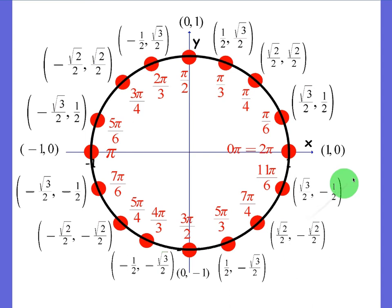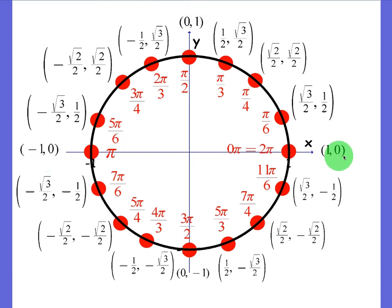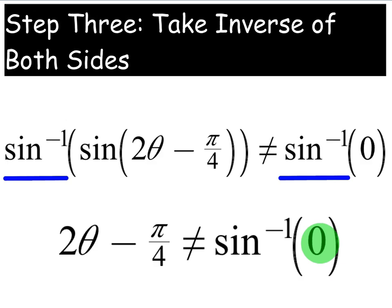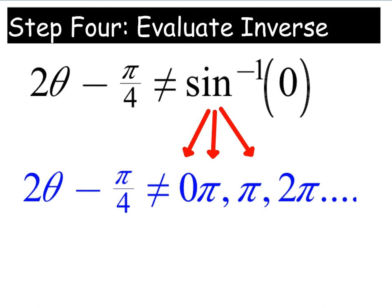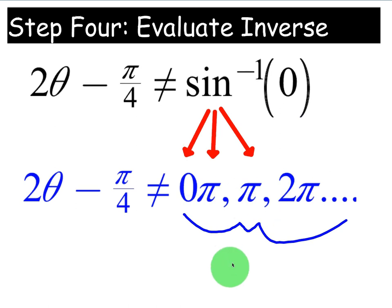The next question is: what is arcsin(0)? Going back to the unit circle, it's everywhere the y-value equals zero. Sine equals zero at 0, at π, and at 2π. So when writing our domain, we write 0, π, and 2π — those are all values of arcsin(0). When doing domain problems, you want to write out three values so you can see the pattern.